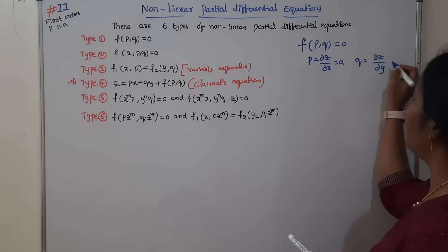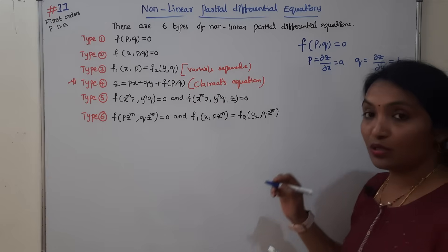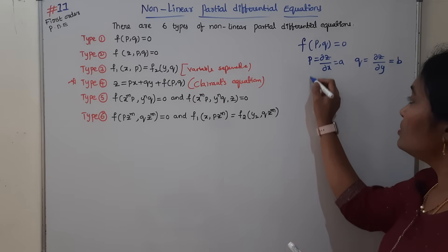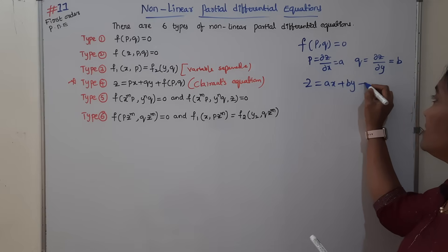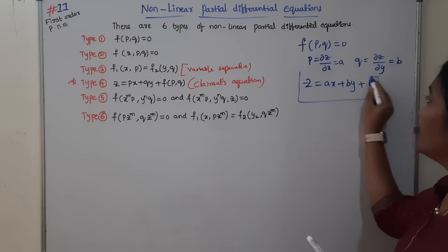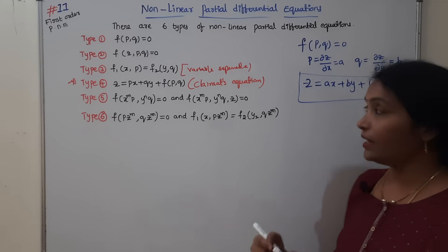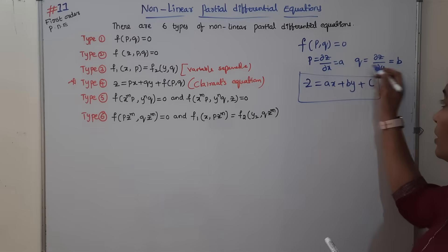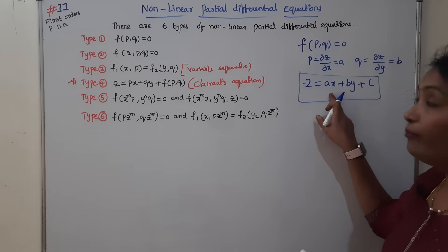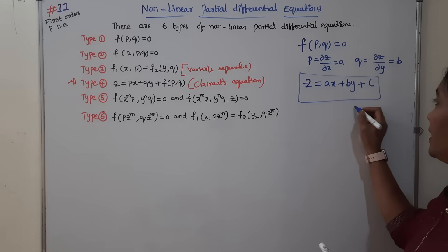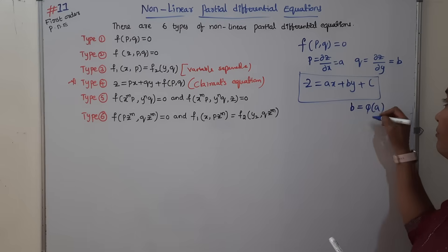Now, the solution: what is the actual solution? The solution of the given equation is z = ax + by + c. This is the general solution, where p = a and q = b. That means a and b are constants, and b is expressed in terms of φ(a).